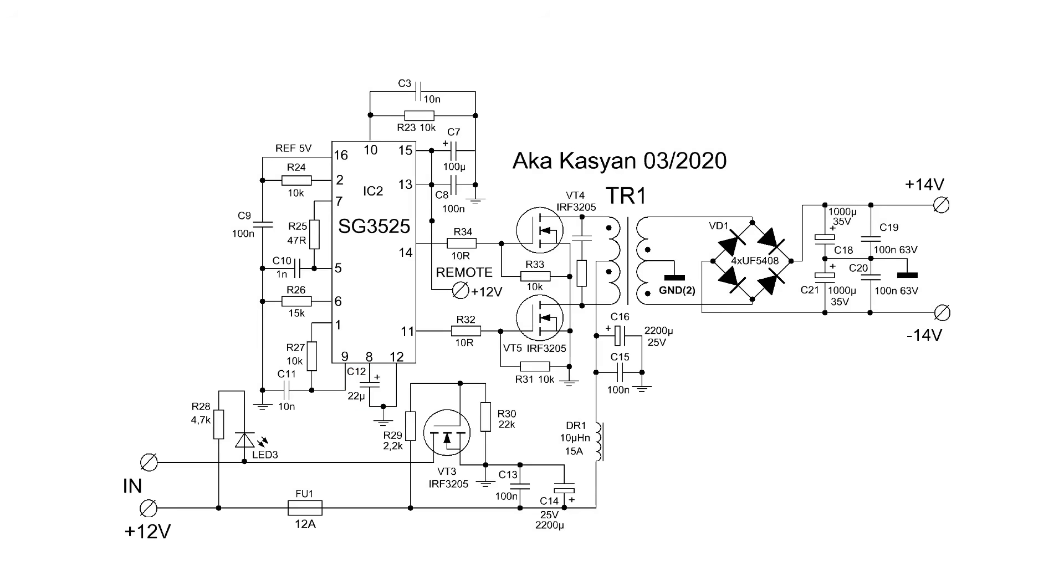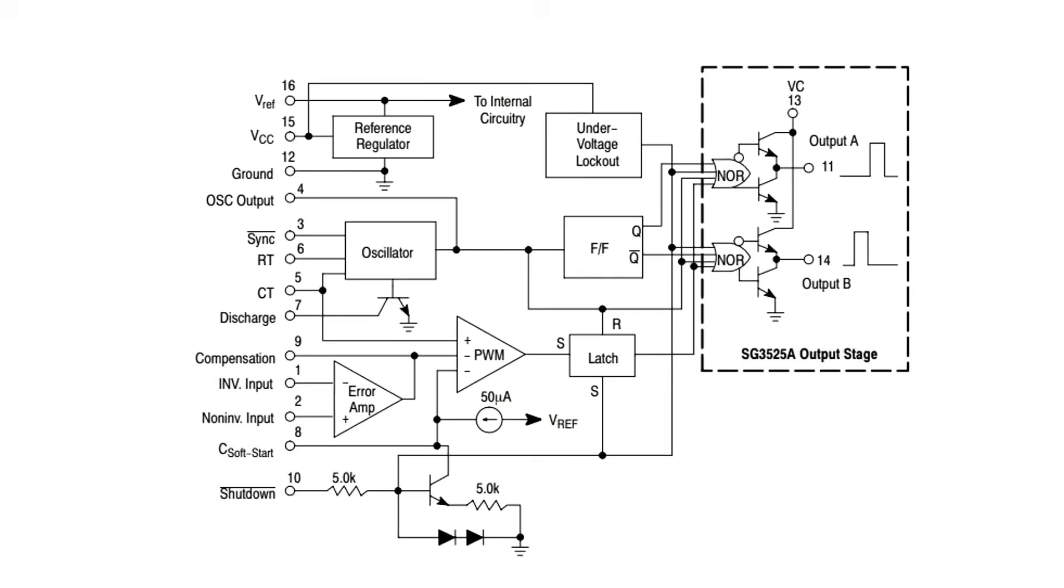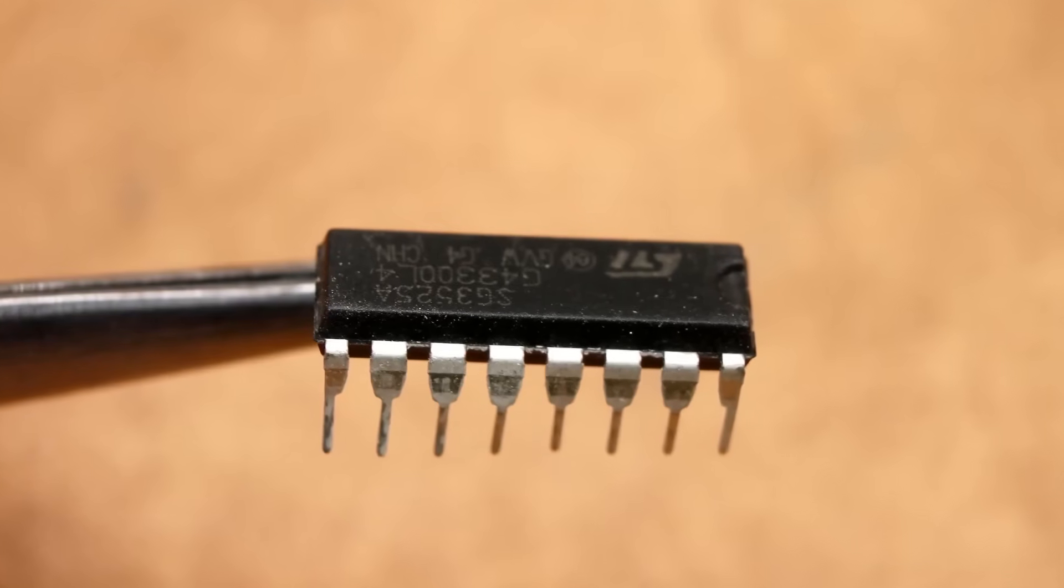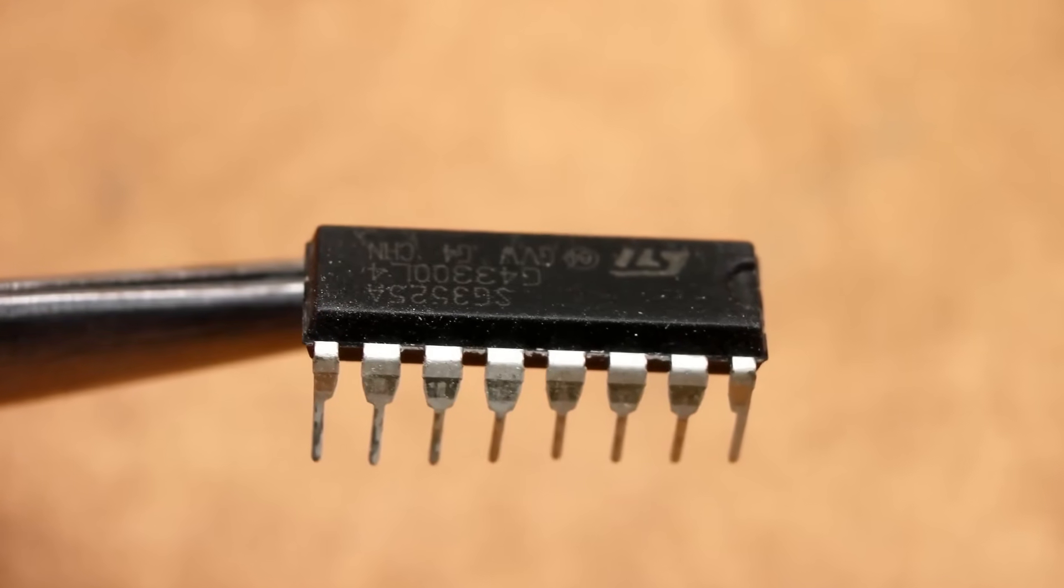The output of the PWM controller is loaded with field-effect transistors that control the pulse transformer. The output voltage is bipolar, rectified by a bridge, smoothed, and then supplied to the low-frequency amplifier chips, the P3525 chip. It has a protection pin. This is pin 10. If the voltage on this pin exceeds a certain level, the circuit will shut down.